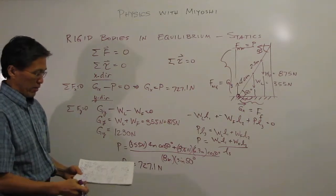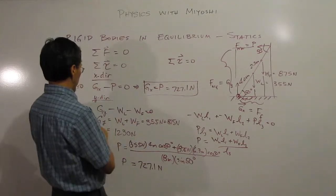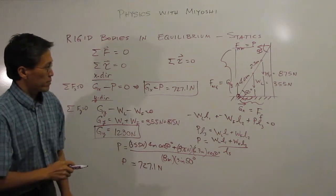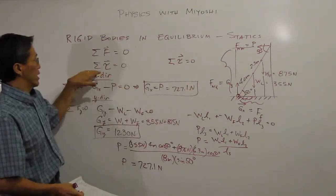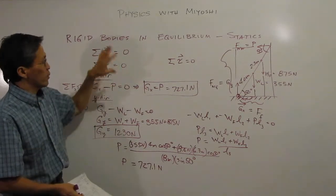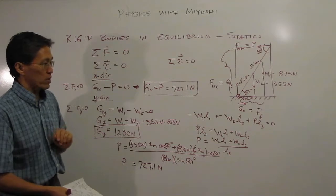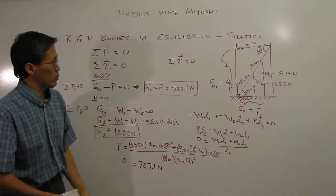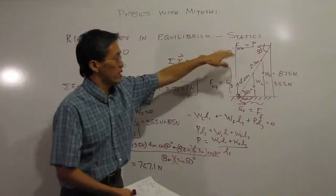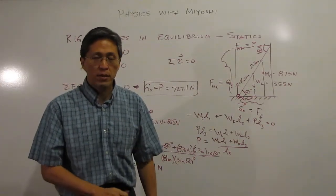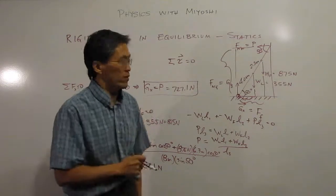So we now have all the forces that were unknown: GX, P, and GY. By summing all forces to zero — since there's no acceleration, no translational or rotational motion — and summing torques to zero, we can solve static problems with no motion. Hopefully you'll be able to apply this to rigid body equilibrium problems. Thanks for tuning in to Physics with Meyoshi.